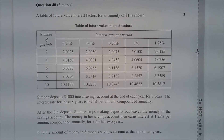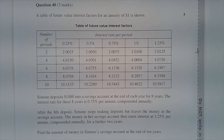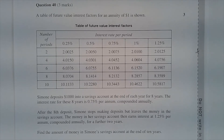After the 8th deposit, Simone stops making deposits but leaves the money in the savings account. The money in her savings account then earns interest at 1.25% per annum, compounded annually, for a further 2 years. Find the amount of money in Simone's savings account at the end of 10 years.